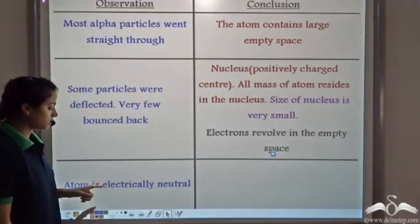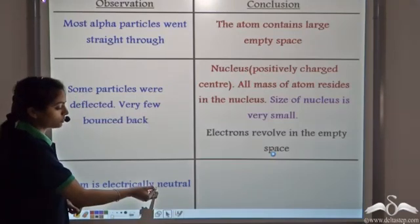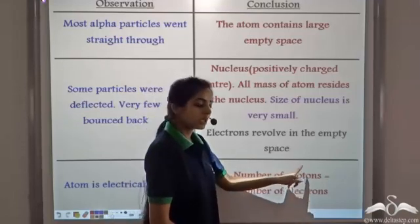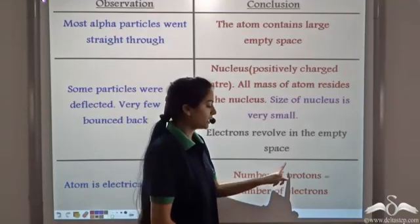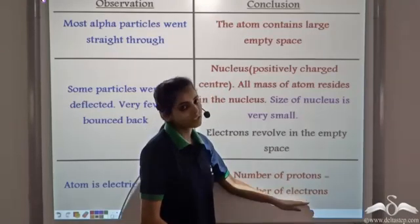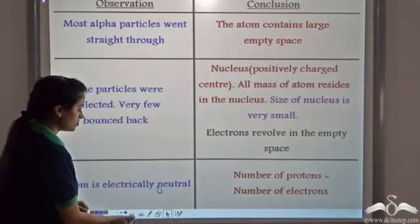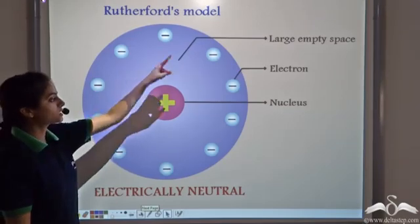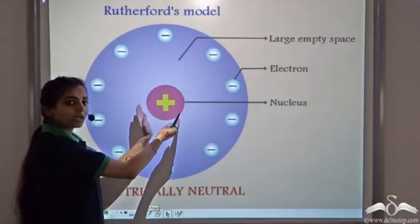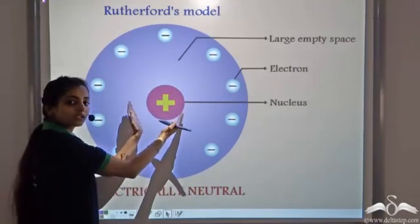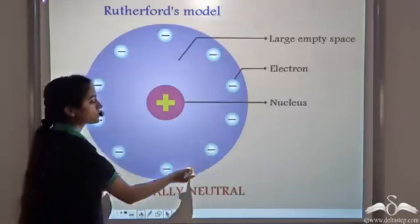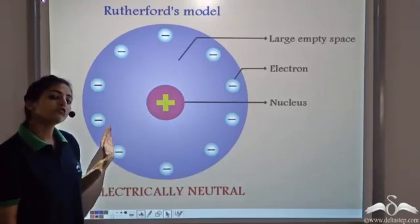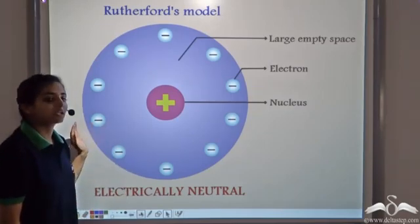He also observed that the atom is electrically neutral. Since an atom is electrically neutral, the total number of protons equals the total number of electrons. Protons are positively charged and electrons are negatively charged, so to maintain electrical neutrality, the number of protons equals the number of electrons. Based on these observations, Rutherford gave his model — Rutherford's model of the atom — in which most space in the atom is empty, the entire mass and positive charge is concentrated in the nucleus, the electrons revolve around the nucleus in empty space, and the number of protons equals the number of electrons.